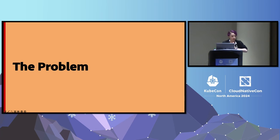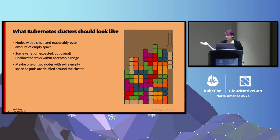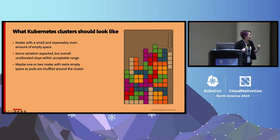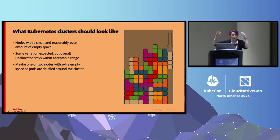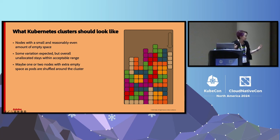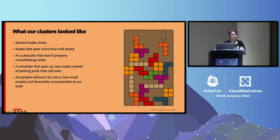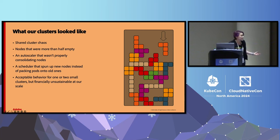Here's what Kubernetes clusters should look like in an ideal world: nodes with a small and reasonably even amount of empty space, packed tightly and with good organization. There's some variation expected as nodes get upgraded, pods come up and down, but overall unallocated space should stay within an acceptable range. Here's what we were working with: shared cluster chaos. We had nodes more than half empty, an autoscaler that wasn't properly consolidating them, and a scheduler that spun up new nodes instead of packing pods onto old ones. With hundreds of clusters and thousands of nodes, this was becoming financially unsustainable.